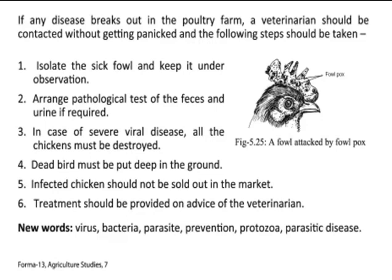If any disease breaks out in the faulty farm, it should be contracted without getting panicked, and proper steps should be taken. Call the veterinary doctor to get the treatment. Isolate the sick falls and keep under observation. Arrange the pathological test of the flock if required. In case of a severe viral disease, all the sickan must be destroyed. Dead birds must be put in the ground. In fact, the sickan should not be sold out in the market. Treatment should be provided on advice of the bacterial veterinarian.